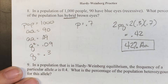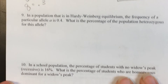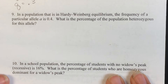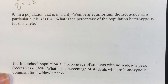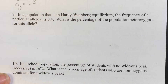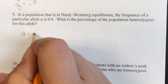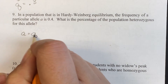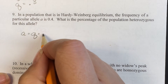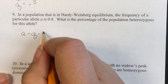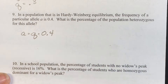And that is the answer for number 8. For number 9: a population in Hardy-Weinberg equilibrium has a frequency of a particular allele, little a, of 0.4. The question asks for the percentage of the population that is heterozygous for this allele. Little a is our q, so q equals 0.4.